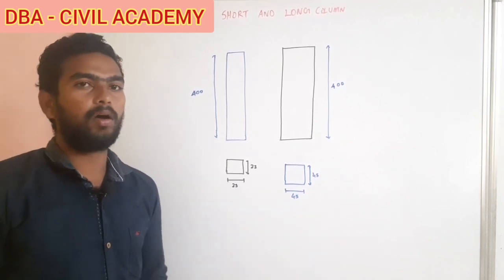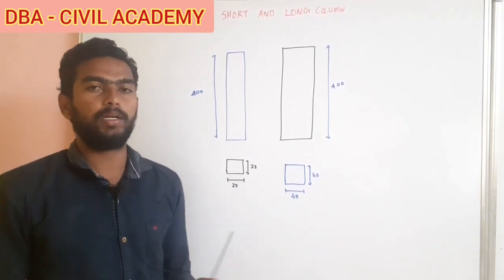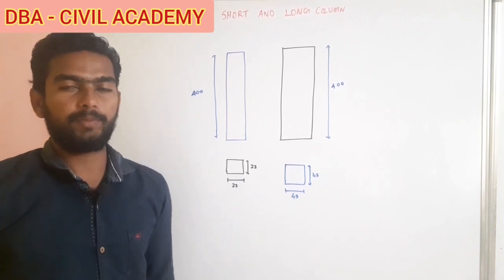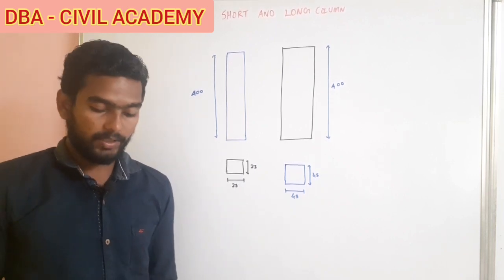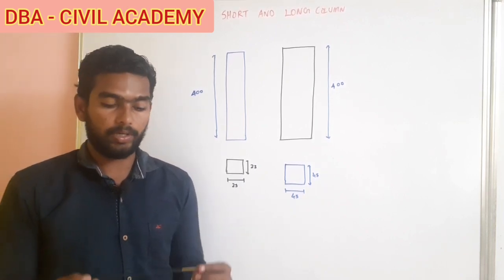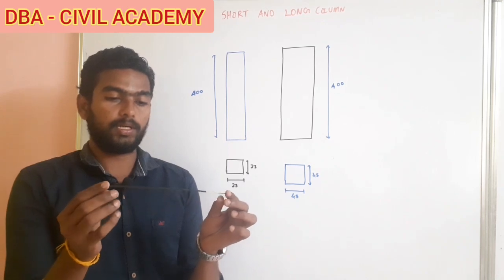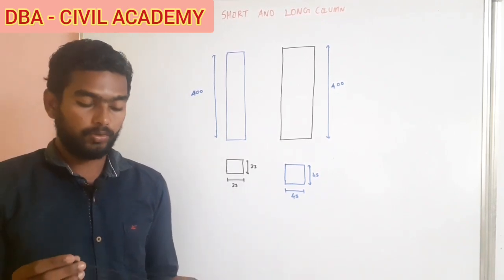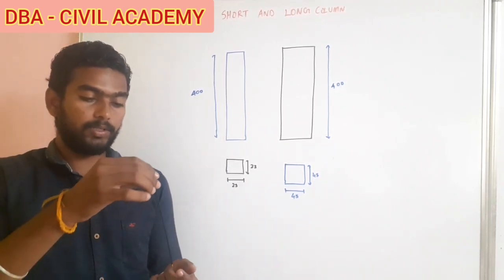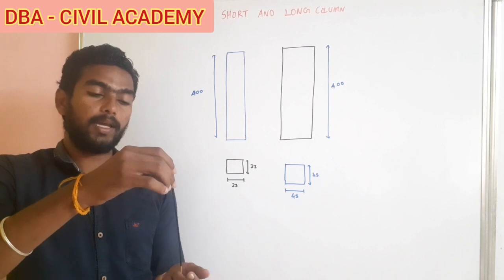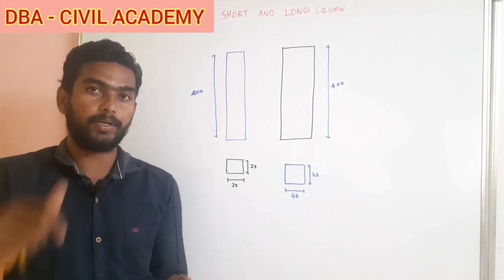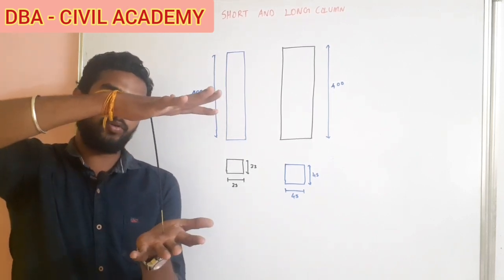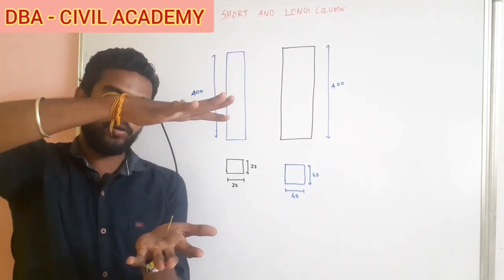Short column and long column are related. First, we will see an experiment. We will see a stick. This stick is around 20 cm. We will apply the actual load — actual load means compressive load. Apply the load.